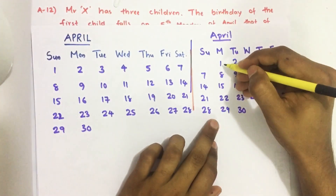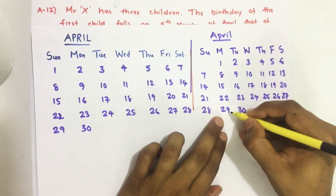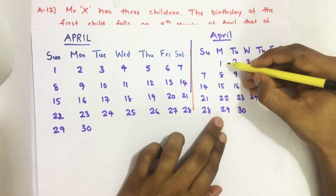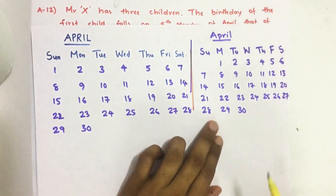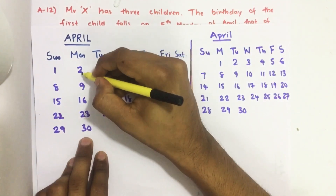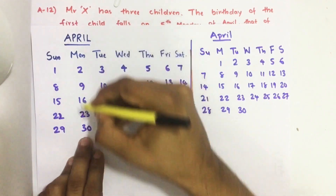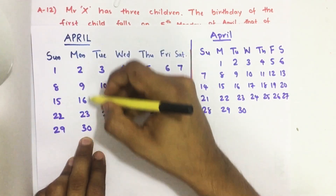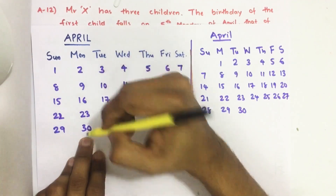If 1st April is Monday, then 29th April will be the 5th Monday of the same month — 1, 2, 3, 4, 5. Similarly, if 2nd April is Monday, then 30th April will be the 5th Monday of the same month — 1, 2, 3, 4, 5.